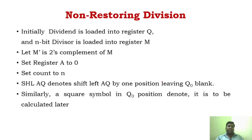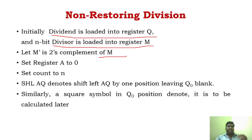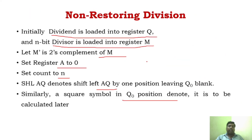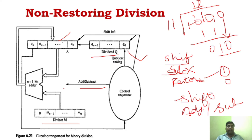Looking at the flowchart and circuit: you load the dividend in register Q, the divisor in M, and initially A is 0. The count is 4 (n = 4 bits). For each cycle, first do a shift operation on A and Q. Then check the sign bit — if 0, compute A minus M; if 1, compute A plus M. Set Q-naught accordingly (0 if sign is 1, 1 if sign is 0). Repeat until count reaches 0. At the end, if A's sign is 1, do a final A plus M to get the true remainder.